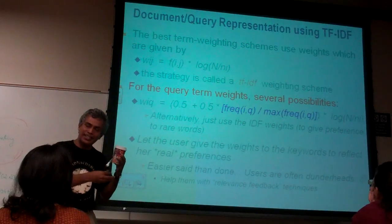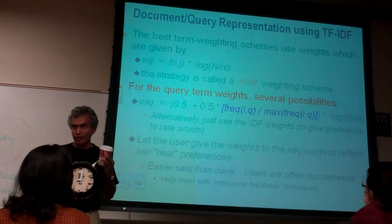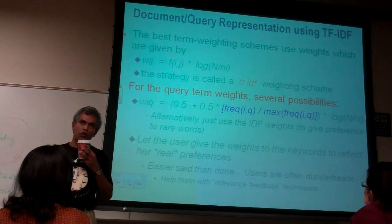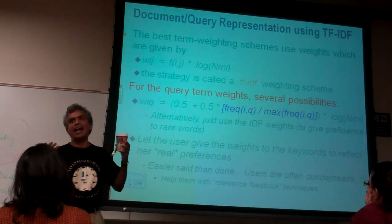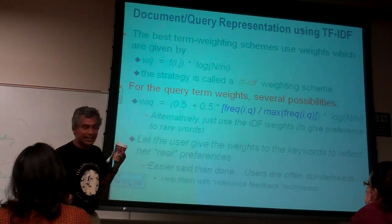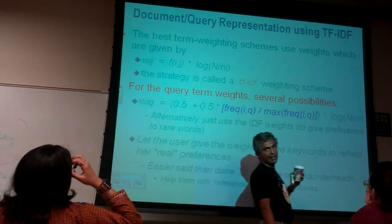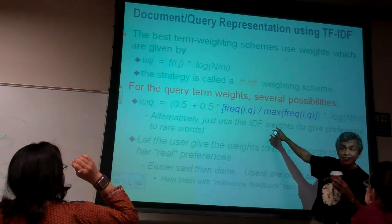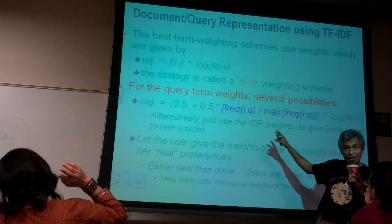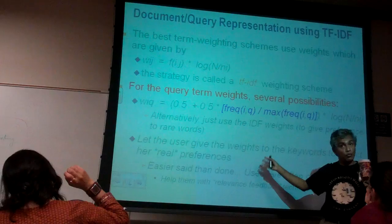So you actually compute the TF of that word with respect to the query. But then rather than just go with it, you multiply that by 0.5 and add a 0.5 to begin with. And then you multiply that by the IDF.